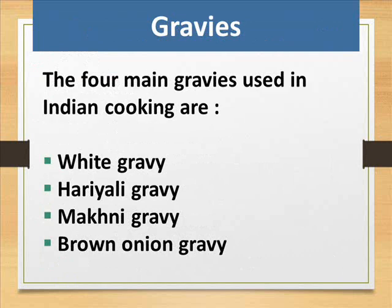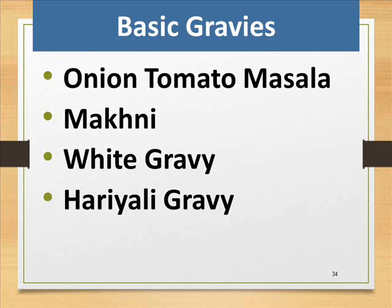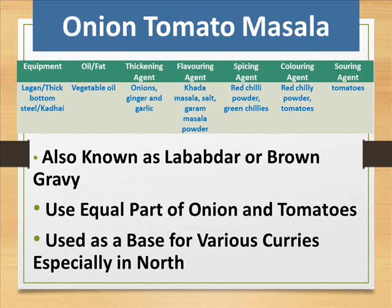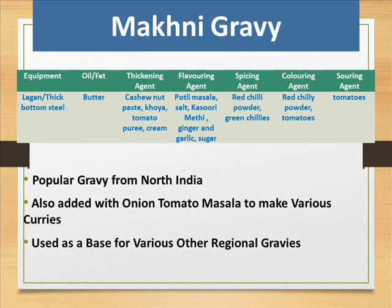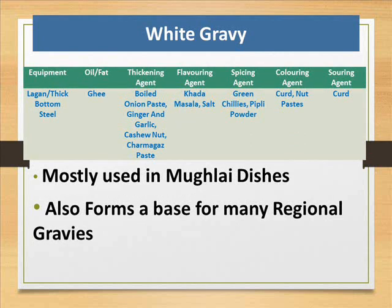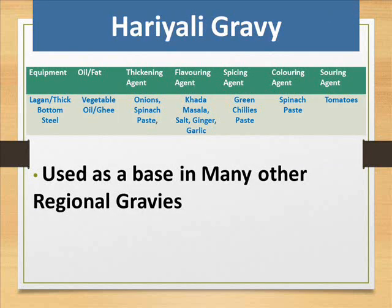Gravies: the four main gravies used in Indian cooking are White gravy, Hara (green) gravy, Makhani gravy, and Brown onion gravy. Basic gravies include: Onion tomato masala — also known as lal addar or brown gravy — uses equal parts onion and tomatoes and is used as a base for various curries, especially in the north. Makhani gravy is a popular gravy from north India, also added with onion tomato masala to make various curries. White gravy is mostly used in Mughlai dishes and also forms a base for many regional gravies.